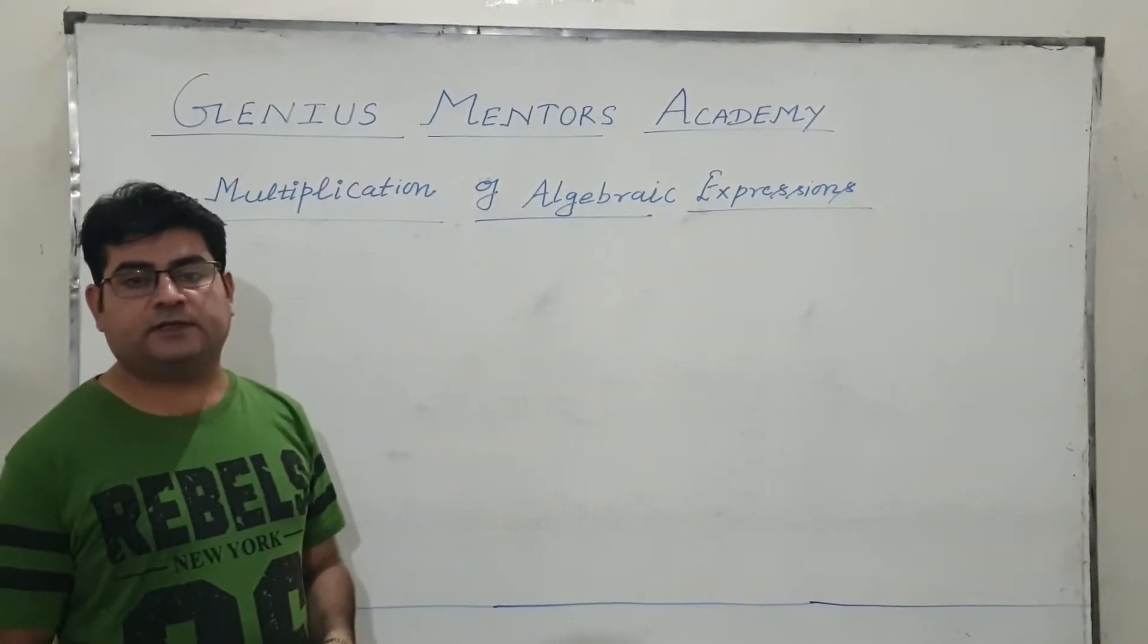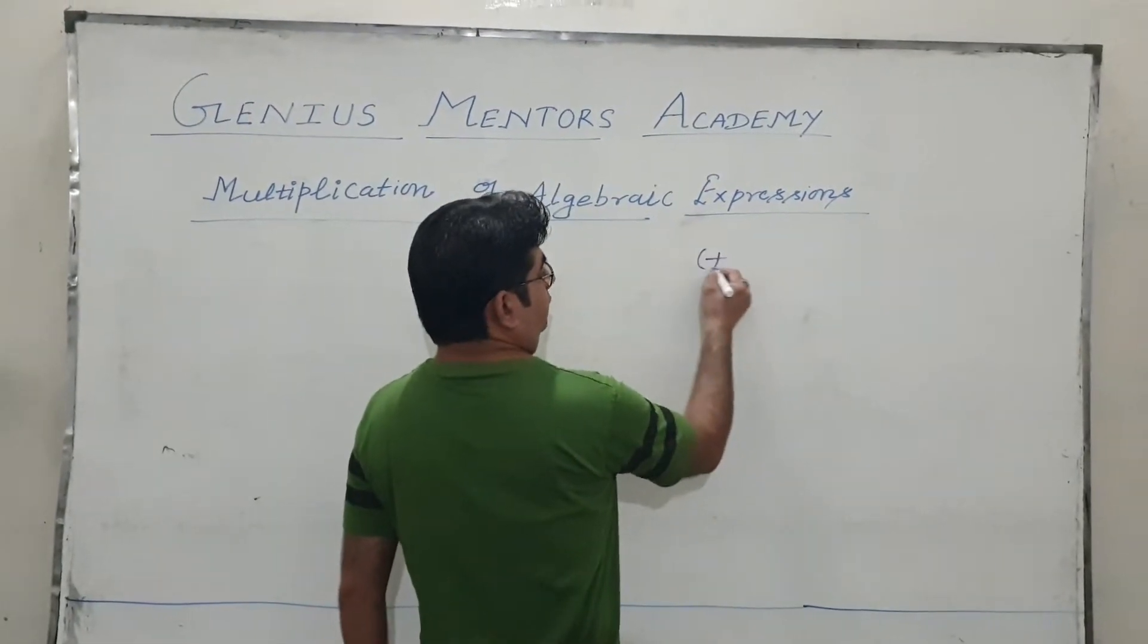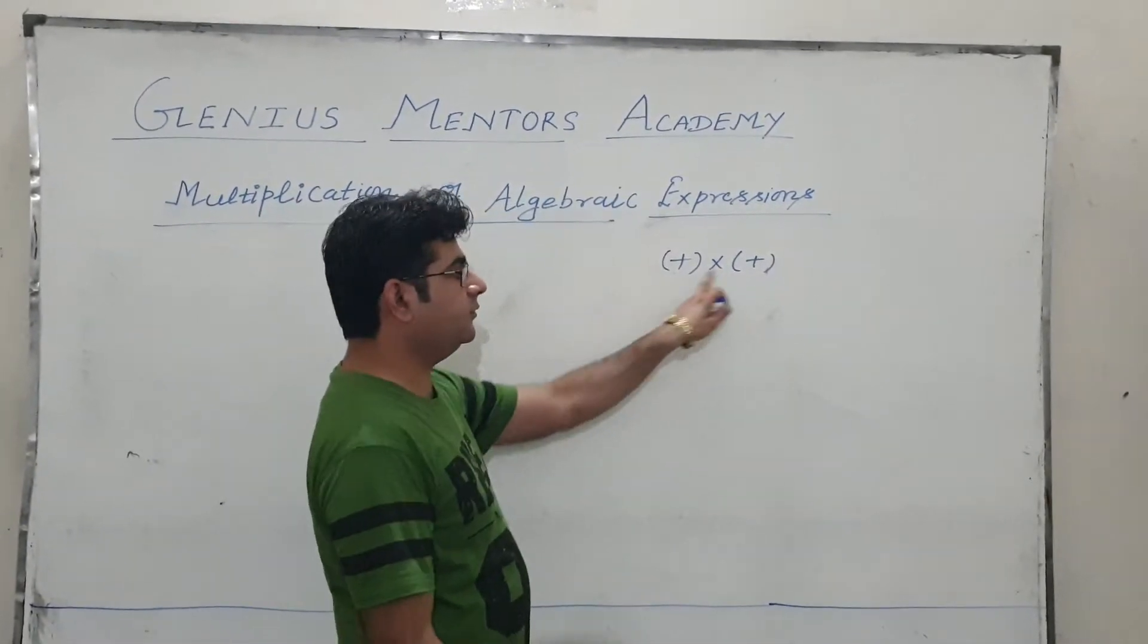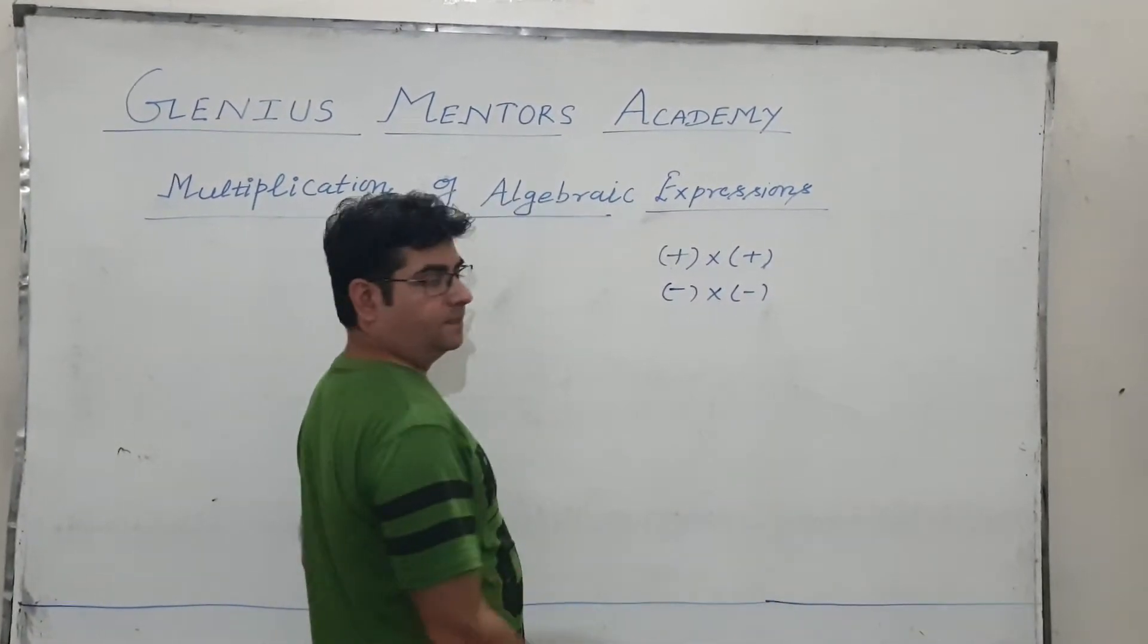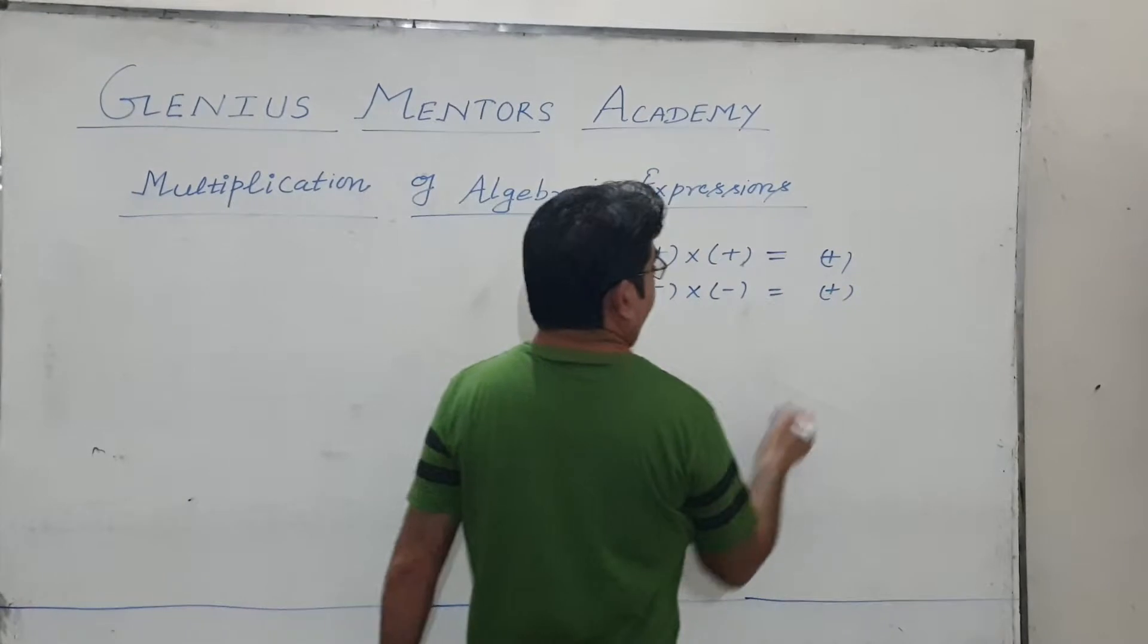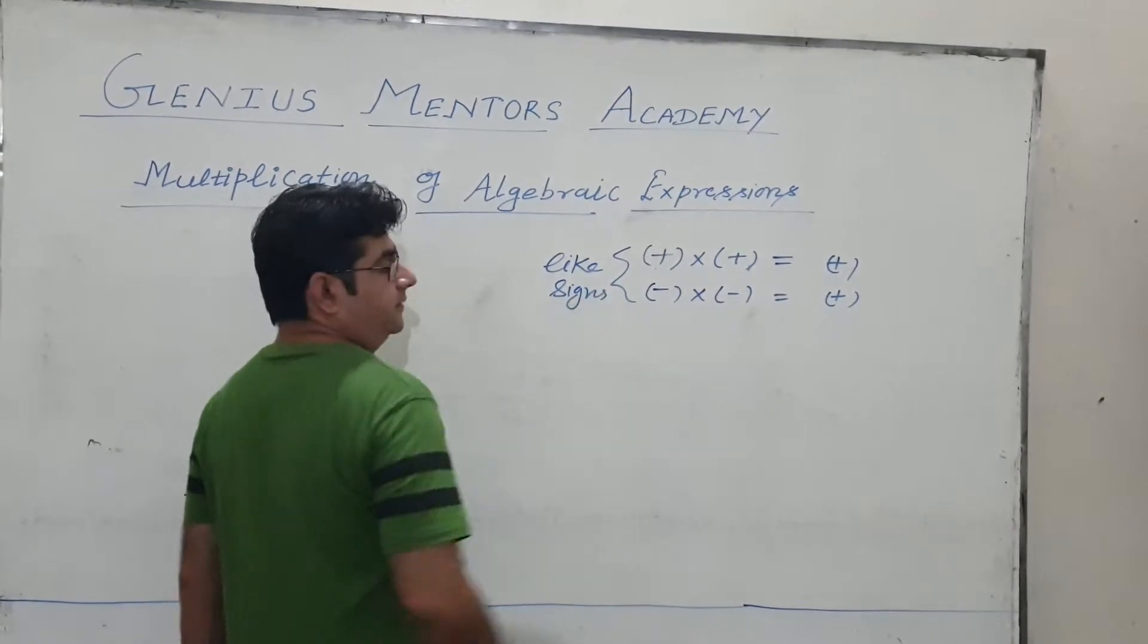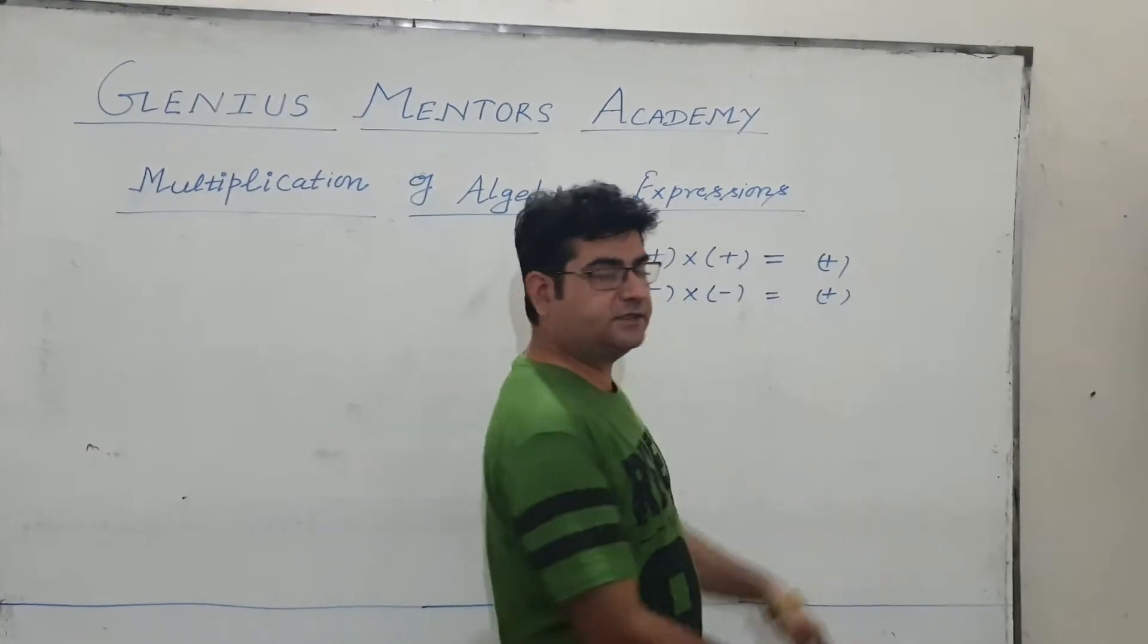Before taking the topic of algebraic expression we should know the basic rules. Two factors with like sign, either positive positive or negative and negative, their answer will be positive. Like sign means if you have both positive or both negative then your answer will be positive.